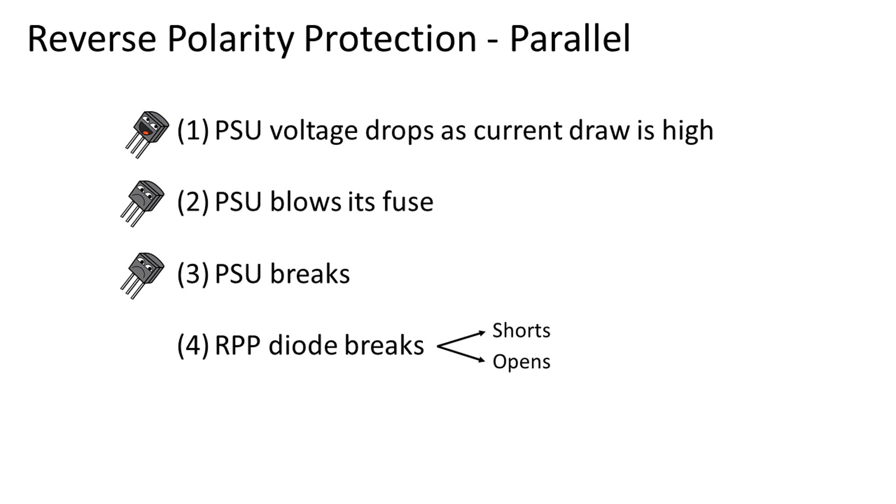4. The diode breaks due to the excessive power it has to deal with. If it breaks, two things can happen. Usually, the diode becomes a short. When this happens, the diode relies on a fuse to blow, like described in scenario 2, or the PSU breaks. In rare cases, the diode becomes an open circuit. When this happens, the reverse polarity can just pass to the rest of the circuitry with ease and damage it nonetheless.